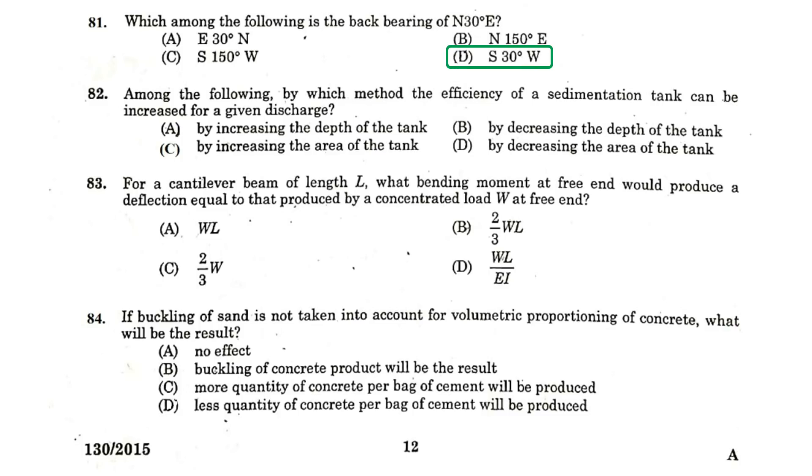Which among the following is the back bearing of N 30 degree East? South 30 degree West. Among the following by which method the efficiency of a sedimentation tank can be increased for a given discharge? By increasing the area of the tank. For a cantilever beam of length L, what bending moment at free end would produce a deflection equal to that produced by a concentrated load W at the free end?